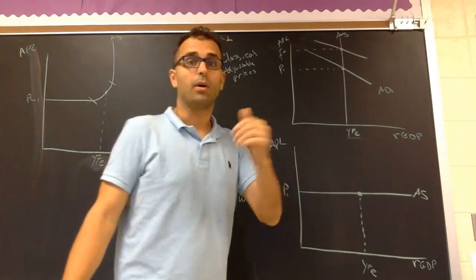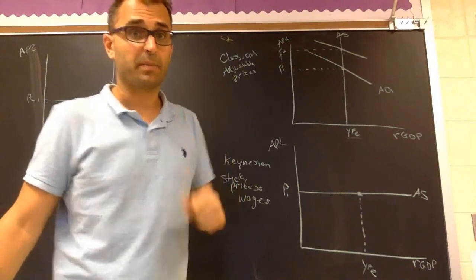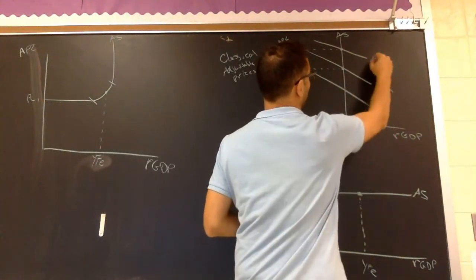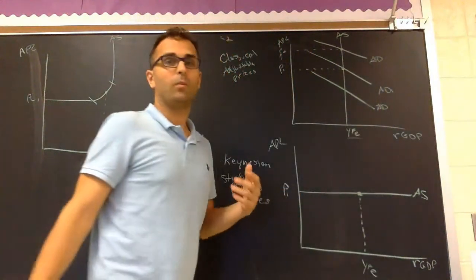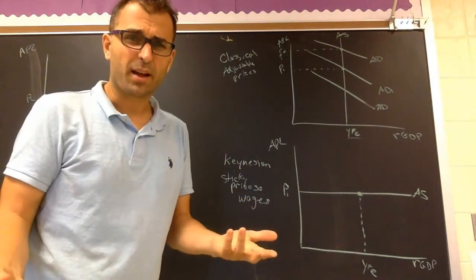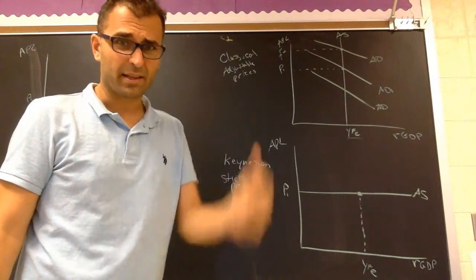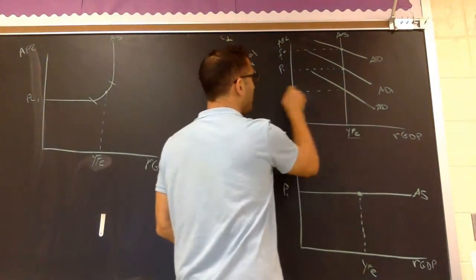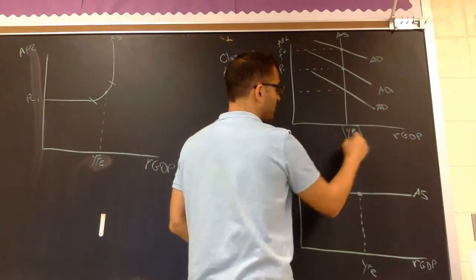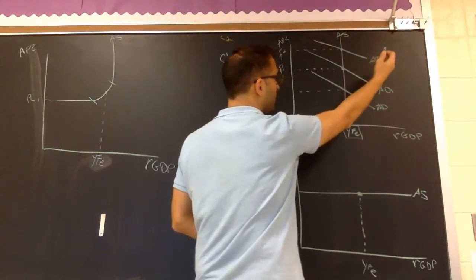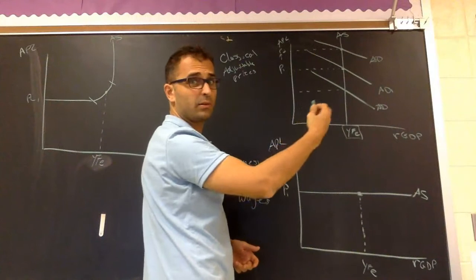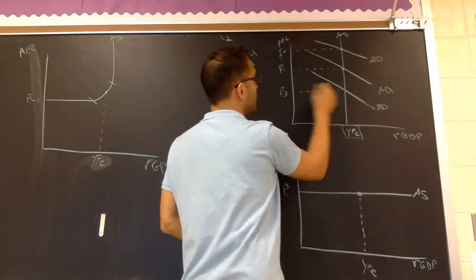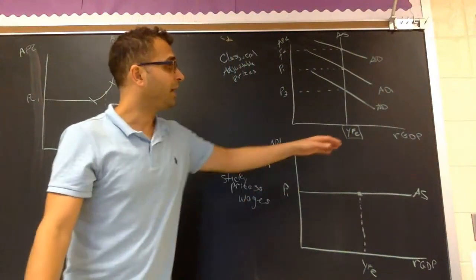What if aggregate demand shifted to the left? Oh boy, we're in a recession, right? Well, we're only going to be in a recession for a very short time because wages and prices adjust super quickly. So price level is going to drop very quickly and output is going to go back to equilibrium. So whether there's an inflationary movement in AD or a recessionary movement in AD, output's going to stay the same.